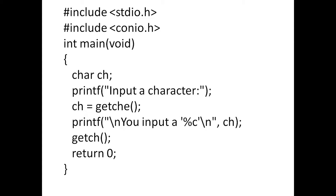Then printf with percent c will display that character. The slash n is a newline character — automatically the cursor will move to the next line. If you give two newline characters slash n, the cursor will move to the next line again. If you don't give a slash n, the cursor will stay on the same line. Then getche returns zero.